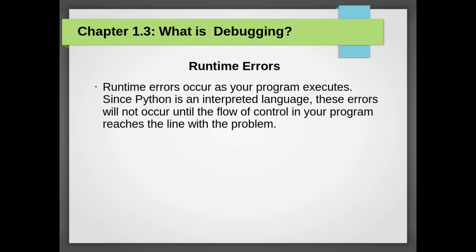The second type of error is a runtime error, so called because the error does not appear until you run the program. These errors are also called exceptions because they usually indicate that something exceptional, and bad, has happened. Runtime errors are rare in the simple programs you will see in the first few chapters, so it might be a while before you encounter one.